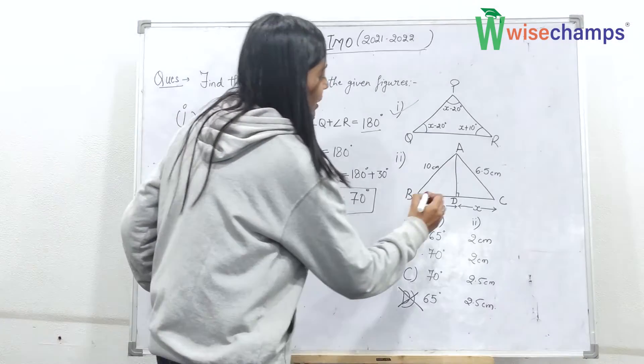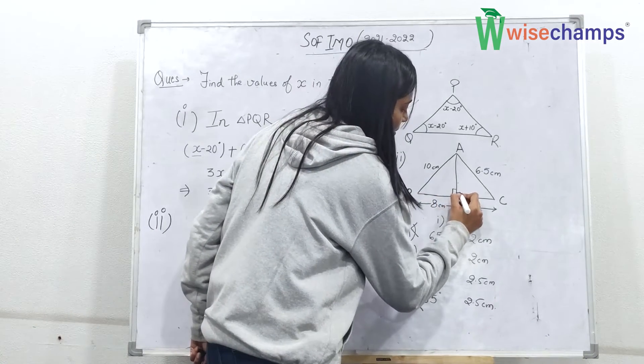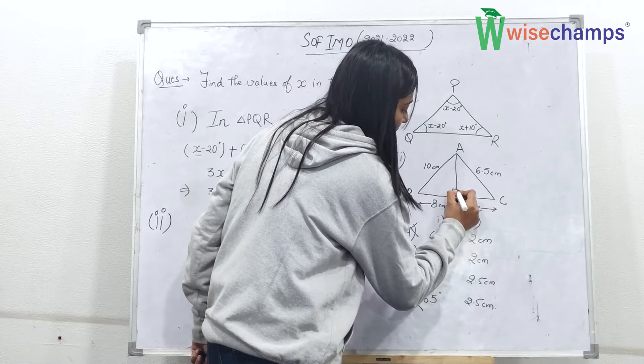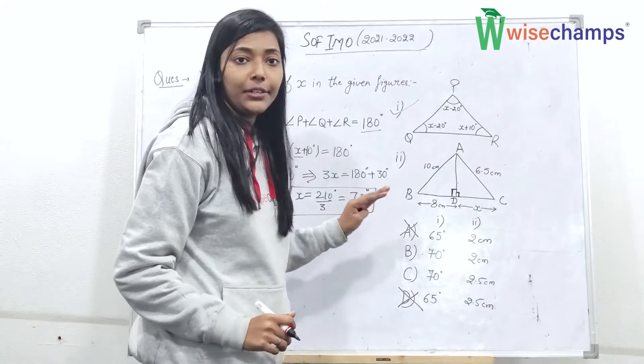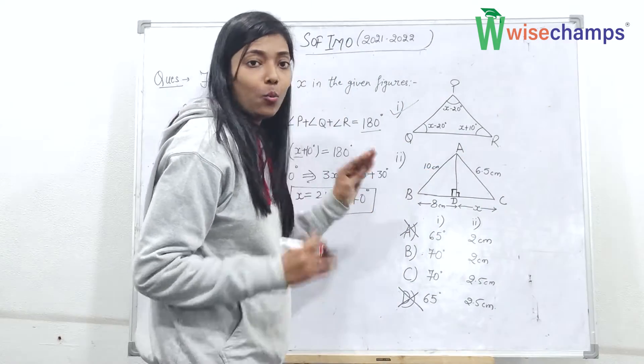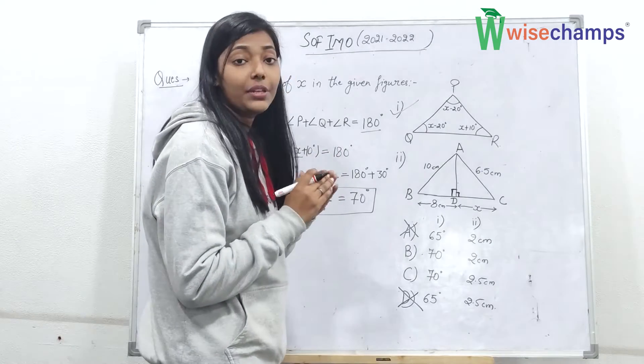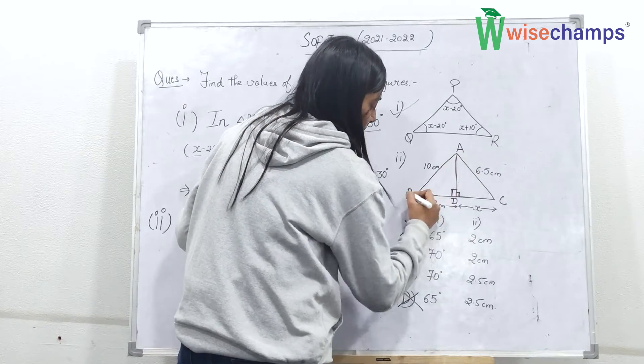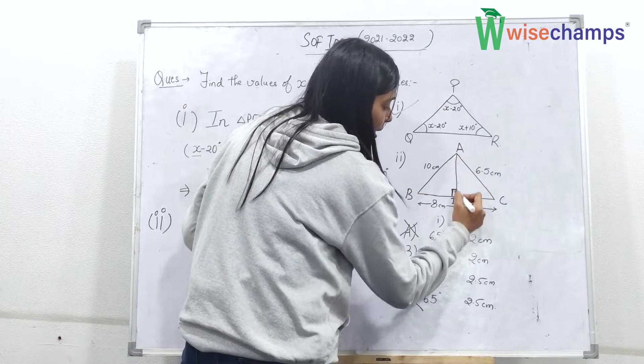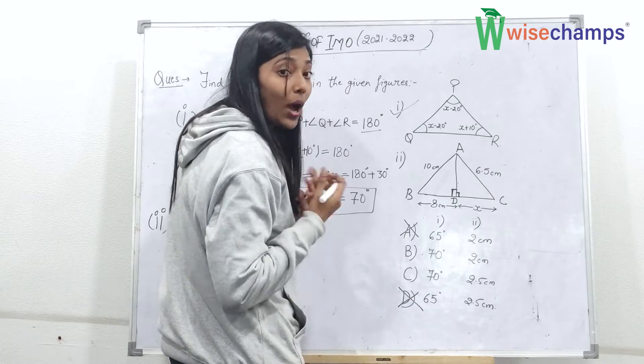Here you can see there is a perpendicular which makes a right angle here. So in this triangle we need to apply, in a right angle triangle we need to apply Pythagoras theorem.